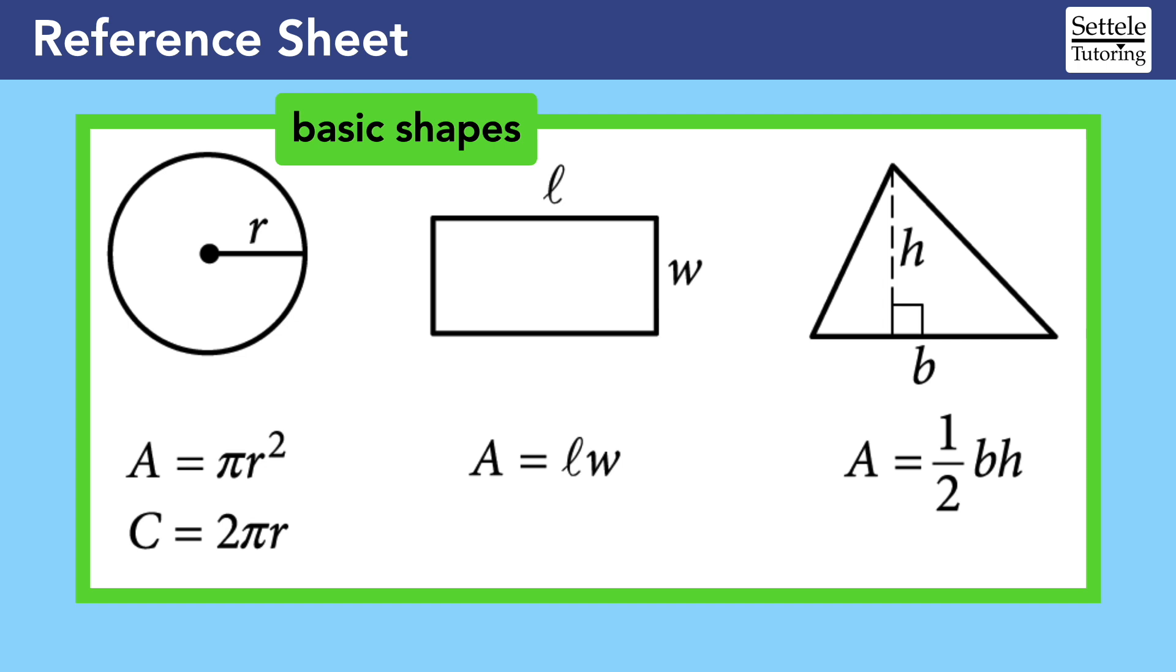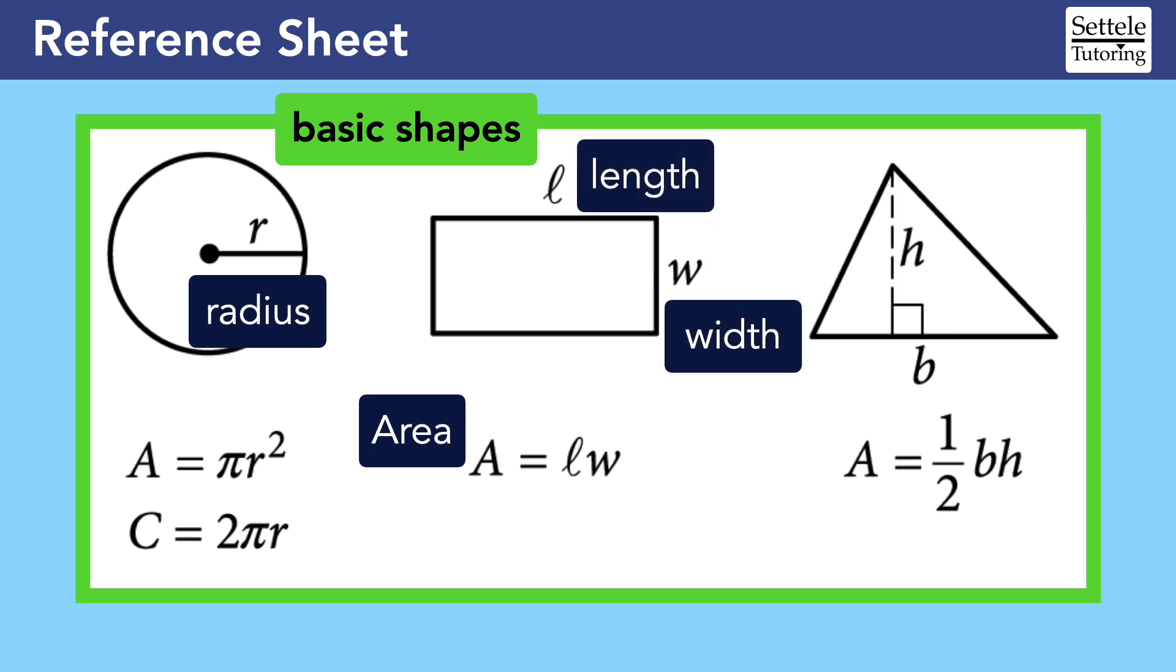The basic shapes are circles, rectangles, and triangles. For each of these shapes, the reference sheet gives us the formula for the area. The relevant dimensions are labeled on the pictures of each shape, but just to be extra clear, the R in the circle is the radius. The rectangle is labeled with the length and width, and the triangle has a base and a height.